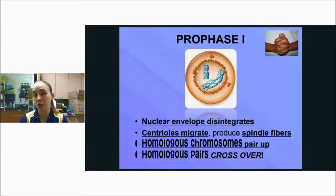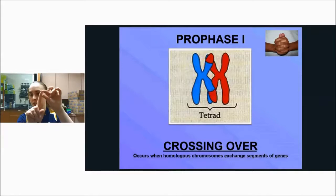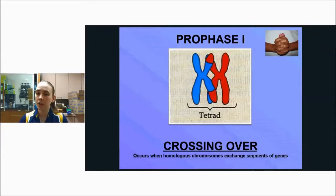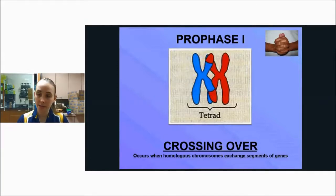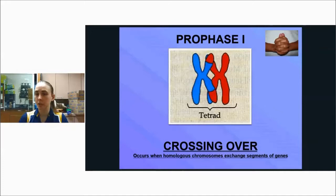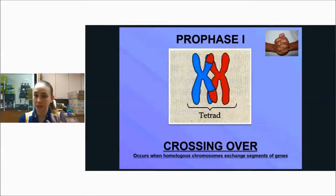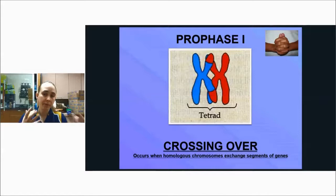The homologous pairs then cross over. Crossing over is when chromosomes touch at a certain part and the two chromosomes exchange gene segments. They're not exchanging the same genetic information, but they are exchanging segments that code for the same trait. For example, if your mom has blue eyes and your dad has brown eyes, and the gene segment coding for eye color is exchanged, the segment that moves to the other chromosome still codes for eye color — but it may carry different information, like blue versus brown.